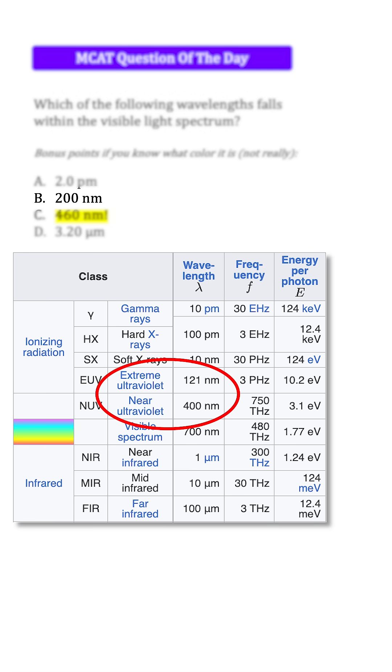Going from the end of the visible spectrum at 380 nanometers through 10 nanometers where the x-rays begin. And D, 3.2 micrometers, falls within the infrared range, which spans from the end of the visible range, around 760 nanometers, through 1 millimeter, where the microwaves begin.